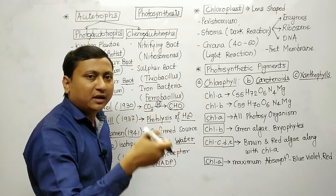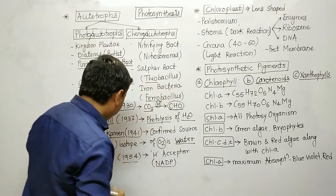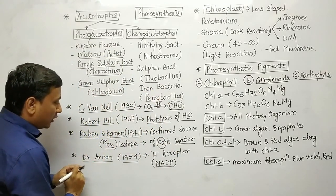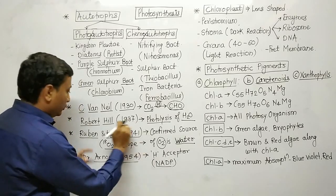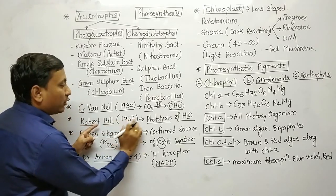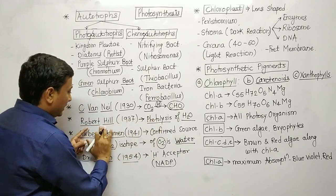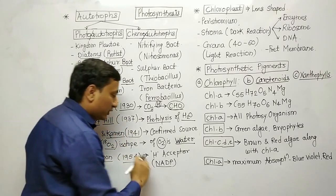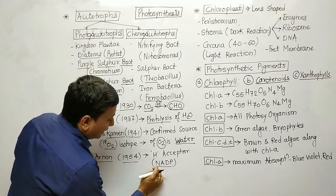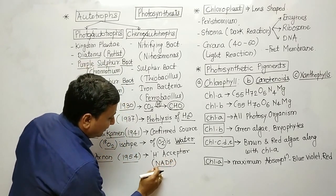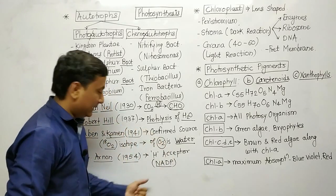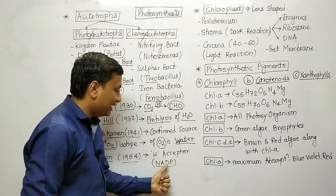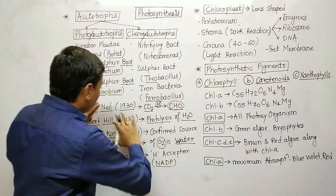An isotope is a compound having the same atomic number but different atomic mass. Next is Dr. Arnon. In 1954, the unknown hydrogen acceptor from the Robert Hill reaction was identified as NADP.